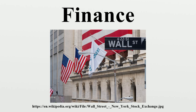Financial services: an entity whose income exceeds its expenditure can lend or invest the excess income to help produce more income in the future. On the other hand, an entity whose income is less than its expenditure can raise capital by borrowing or selling equity claims, decreasing its expenses, or increasing its income. The lender can find a borrower, a financial intermediary such as a bank, or buy notes or bonds in the bond market. The lender receives interest, the borrower pays a higher interest than the lender receives, and the financial intermediary earns the difference for arranging the loan.